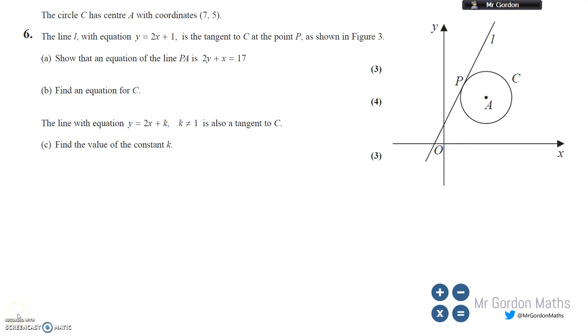Okay guys, question six. Some coordinate geometry with circles and straight lines - we need to work out some bits and pieces. The circle C has center A with coordinates (7,5), so labeling the diagram might help us understand what's going on. So (7,5) is A, that's the center of the circle.